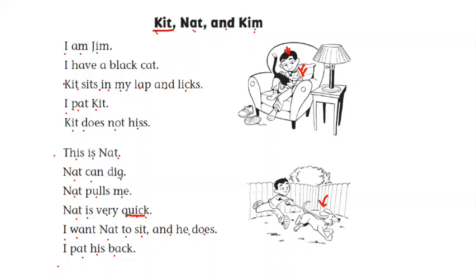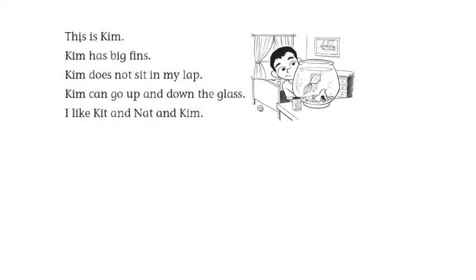I want Nat to sit and he does. I pat his back. Most of these words over here are high-frequency words. That's why we are reading them on sight without blending. This is Kim. So Kim, as we know, is the fish. Kim has big fins. Kim does not sit in my lap.